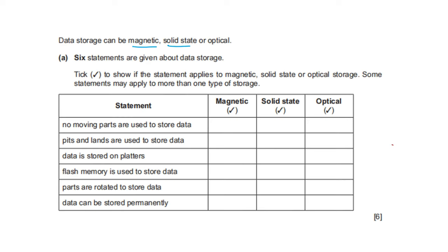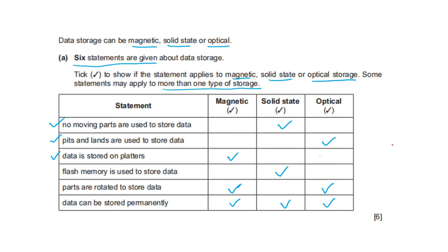Data storage can be magnetic, solid state, or optical. Six statements are given — tick to show if each applies to magnetic, solid state, or optical storage; some may apply to more than one. No moving parts are used to store data — solid state. Pits and lands are used to store data — optical, as on CDs, DVDs, and Blu-ray. Data is stored on platters — magnetic. Flash memory is used to store the data — solid state. Parts are rotated to store the data — magnetic and optical. Data can be stored permanently — magnetic, solid state, and optical.